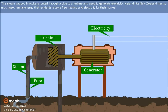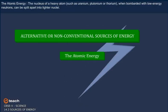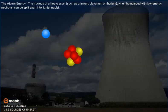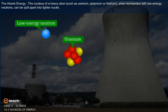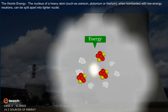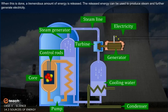The atomic energy: The nucleus of a heavy atom such as uranium, plutonium, or thorium, when bombarded with low energy neutrons, can be split apart into lighter nuclei. When this is done, a tremendous amount of energy is released. The released energy can be used to produce steam and further generate electricity.